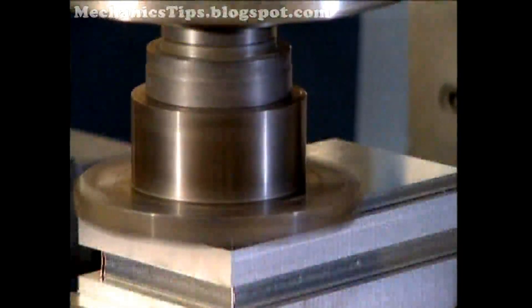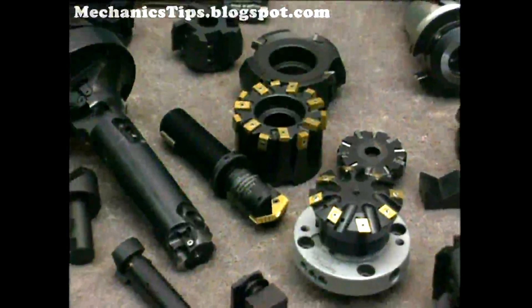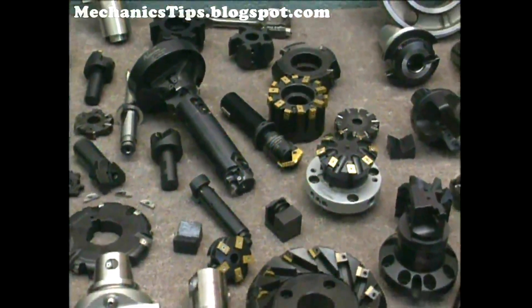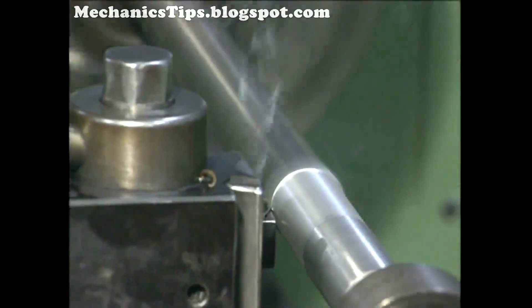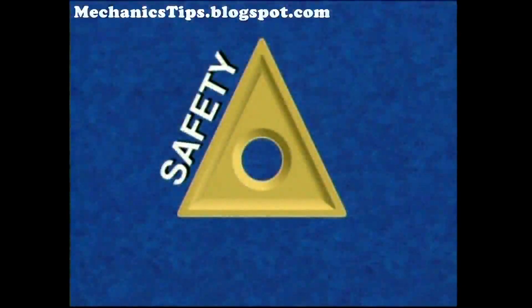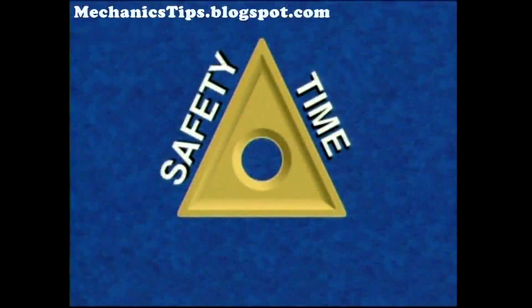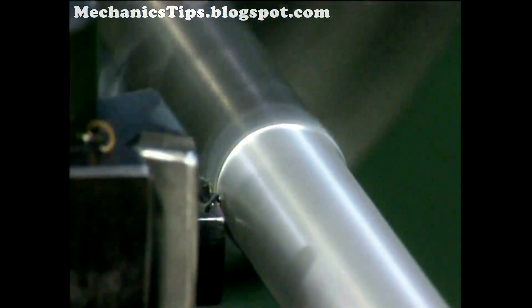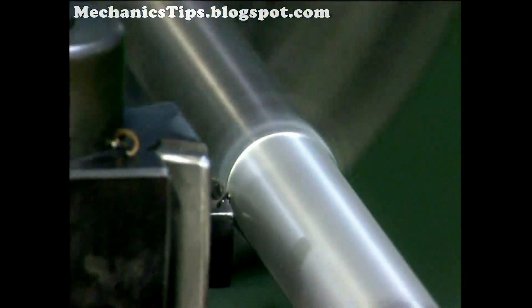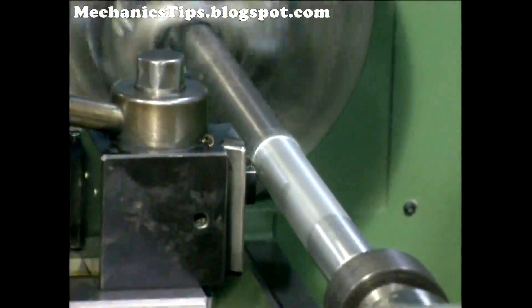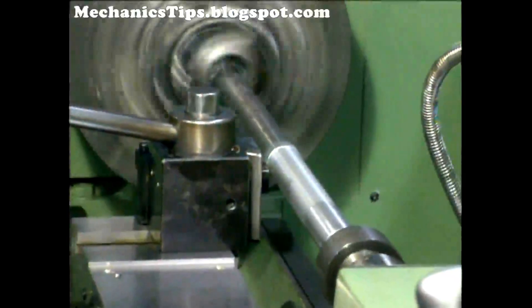Cutting tools are either standard tools, which are purchased as catalog items, or special tools, which are designed and built for a special machining job — often to suit a particular workpiece. The main objective in the selection and application of cutting tools is to safely machine a workpiece in the shortest possible time while meeting the part's quality requirements. Furthermore, the specified tooling should be the least costly and least complex tooling available to satisfactorily fulfill the qualitative and quantitative workpiece demands.